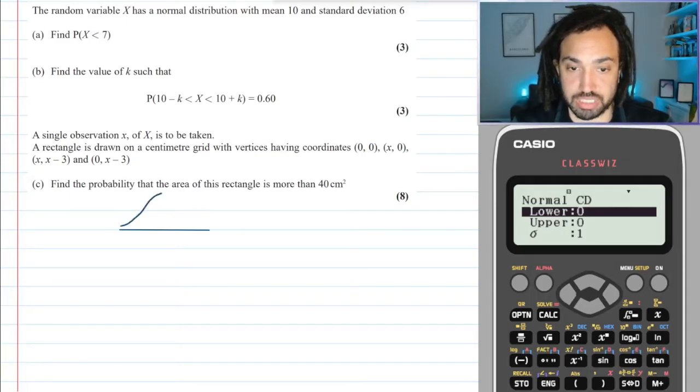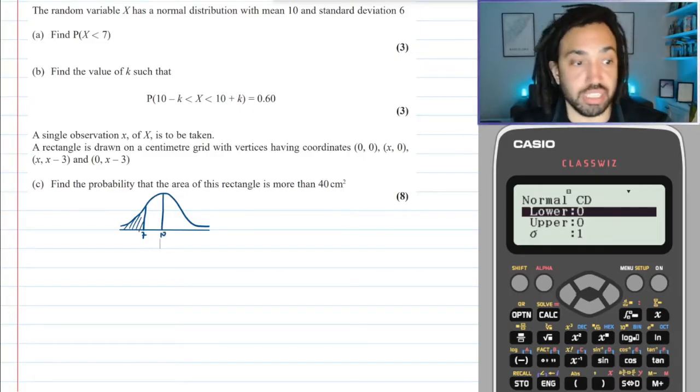Let's just quickly do a quick sketch of what this is actually saying. I want to go 7 or lower, so I want this area in here, given that the mean is 10 and the standard deviation is 6.